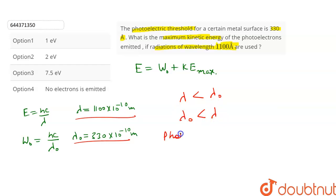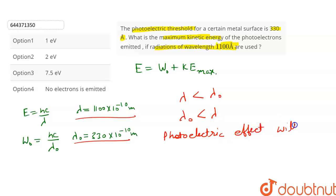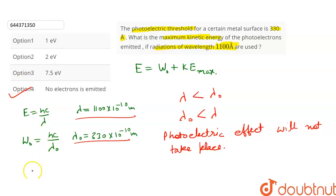Since lambda naught is less than lambda, the photoelectric effect will not take place and no electrons will be emitted. Therefore, option number 4 is the correct answer to this question.